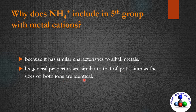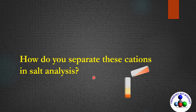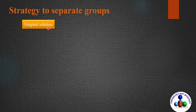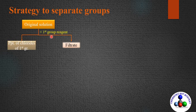Now you have learned the classification of metal cations into different groups and their respective group reagents. But how do you separate these cations in salt analysis? Here is the strategy: first, prepare an original solution by dissolving the salt in water or a suitable solvent. Then, on adding the first group reagent, if first group cations are present you will get a precipitate, which you can test to confirm which cation is present.